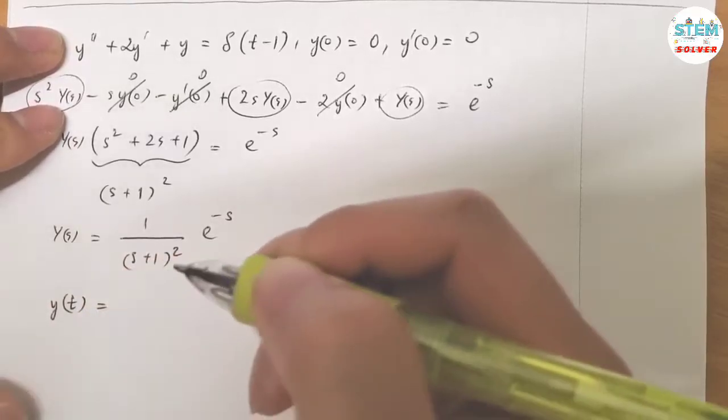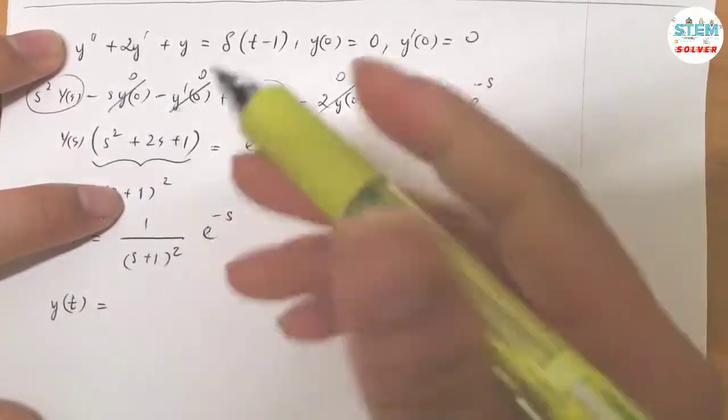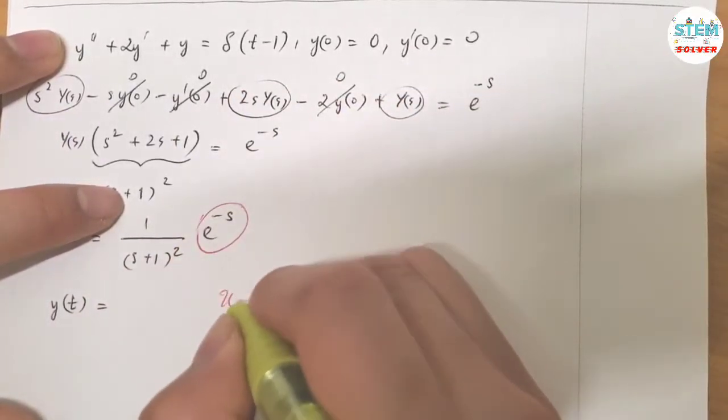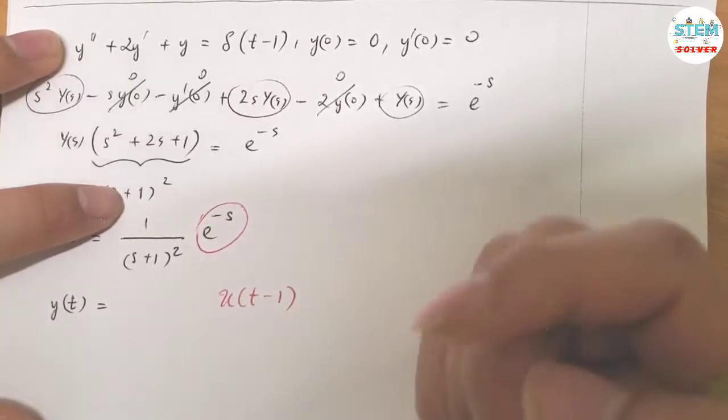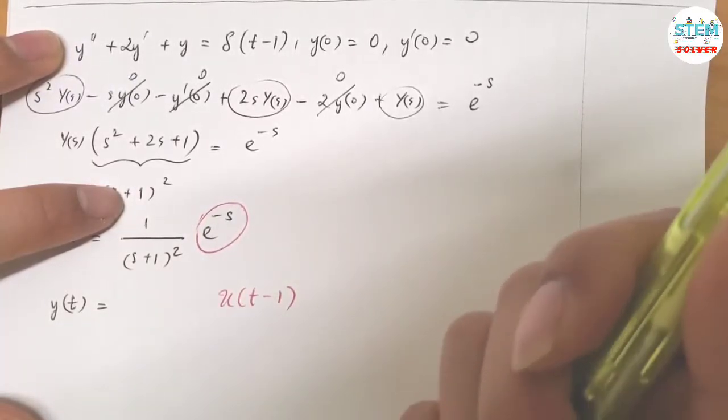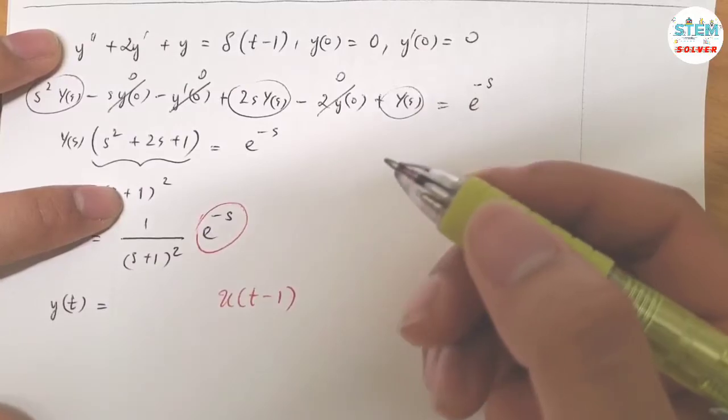Now apply the L inverse on both sides. I have worked this out first, and we have U of T minus 1, and you must get this right no matter what. There's no reason for you to get it wrong.